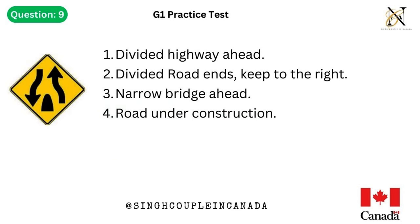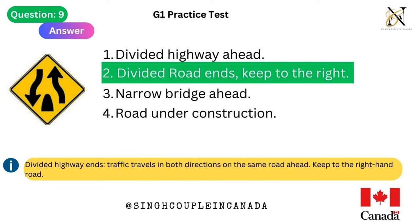Question 9. This traffic sign means: 1. Divided highway ahead. 2. Divided road ends, keep to the right. 3. Narrow bridge ahead. 4. Road under construction. Answer is 2. Divided road ends, keep to the right. Divided highway ends — traffic travels in both directions on the same road ahead. Keep to the right-hand road.